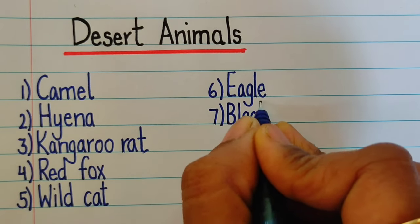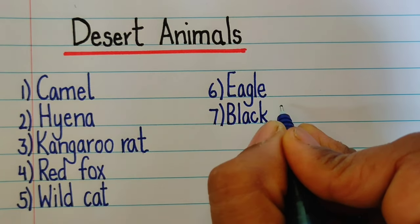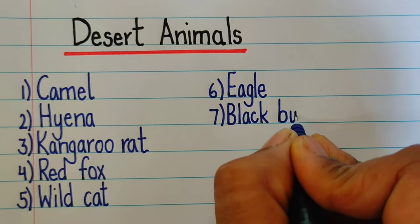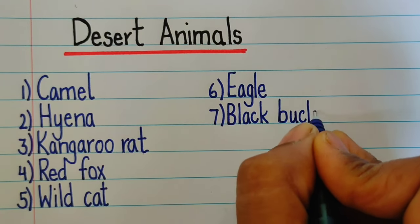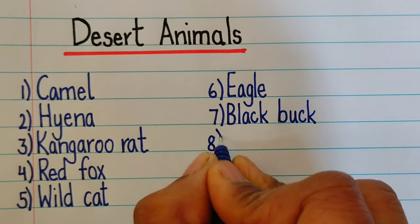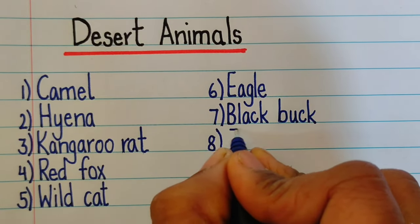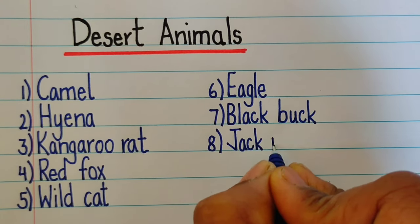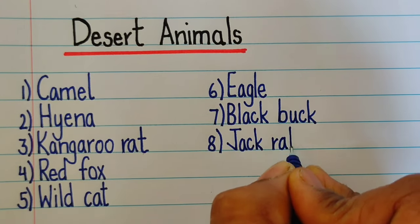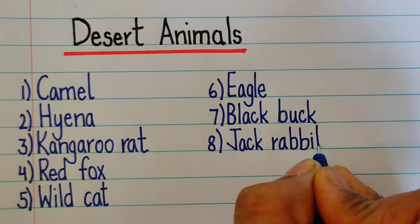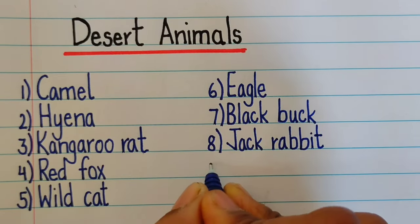Seventh one is black buck — b-l-a-c-k b-u-c-k, black buck. Now coming to the eighth one — eighth one is jack rabbit — r-a-b-b-i-t, rabbit.